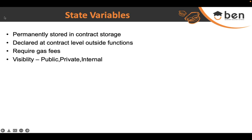Now let's discuss visibility. We will have a separate lesson on visibility later, but for now there are three types of visibility for state variables: public, private, and internal. By default, state variables have internal visibility. For example, if you declare a variable called balance as public, it can be accessed by anyone outside the contract.